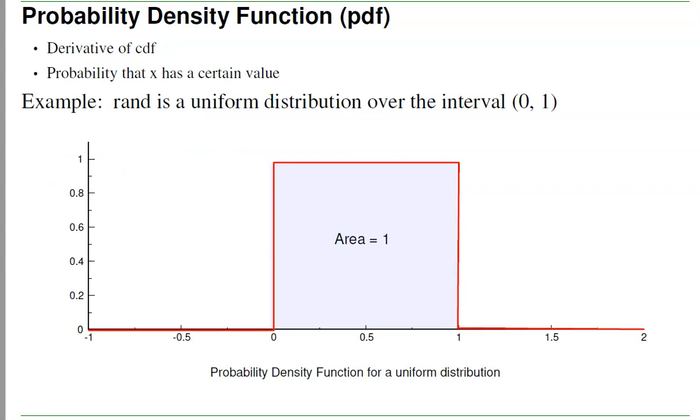Another thing we'll be looking at in this class is a probability density function, pdf. That's the derivative of the cdf. For example, if I take a rand function in MATLAB, it generates a random number between 0 and 1. It has the pdf as follows.